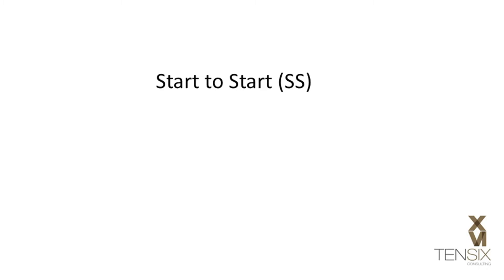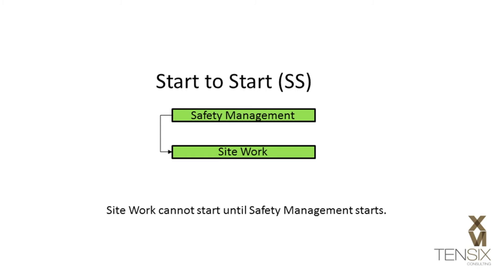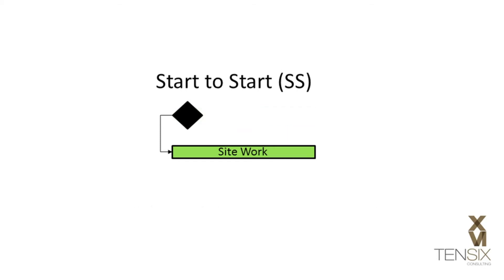Start to Start is used to describe a starting dependency between tasks. In this example, the site work activity cannot start until safety management starts. This type of relationship is commonly used with start milestones.